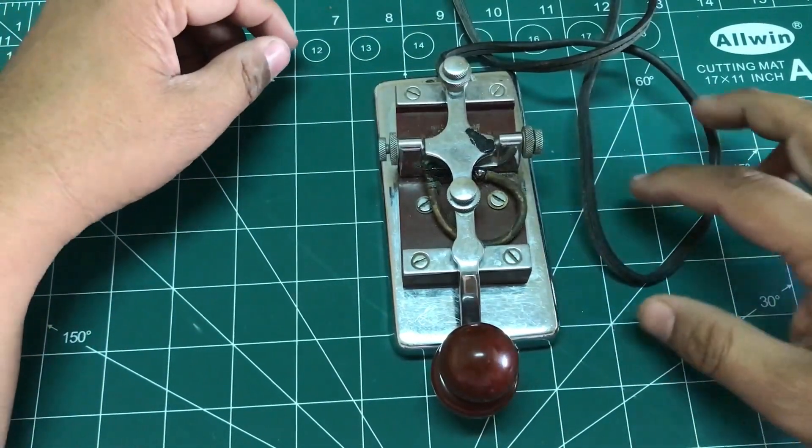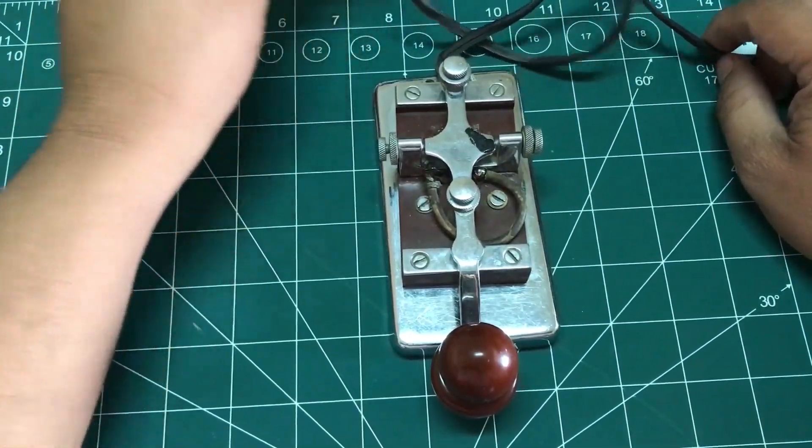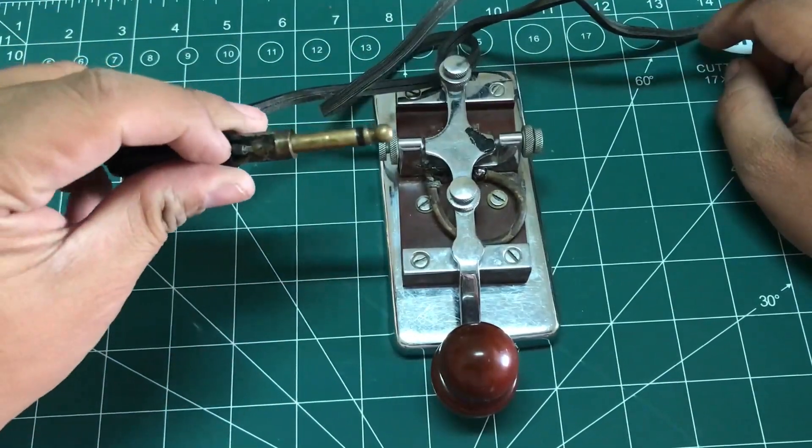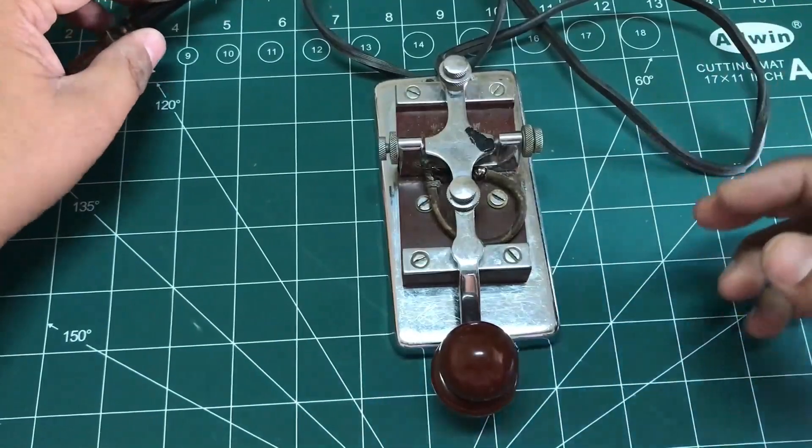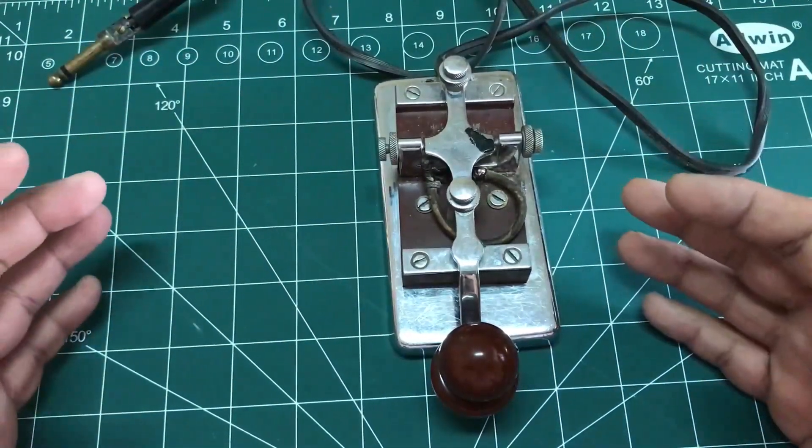This morse code key is connected to a plug board like this. You can simply connect it and do dit dot and all the transmission. This is a telegraph - it's not a complete telegraph system, it's actually a morse code key which generates pulses based on morse code.